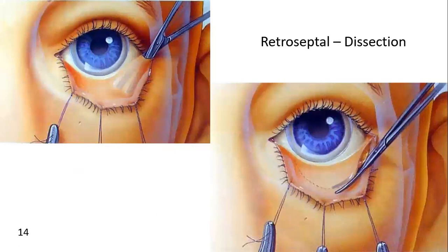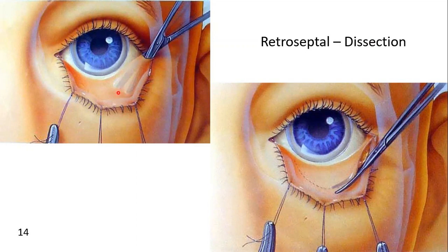Blunt-tipped scissors are used to dissect through the small conjunctival incision made during the lateral canthotomy, inferiorly towards the infraorbital rim. Traction sutures are used to retract the lower eyelid during dissection. The scissors are spread to clear a pocket just posterior to the orbital septum in the retroseptal approach, ending just posterior to the orbital rim. The conjunctiva and lower eyelid retractors are incised midway between the inferior margin of the tarsal plate and the inferior conjunctival fornix.